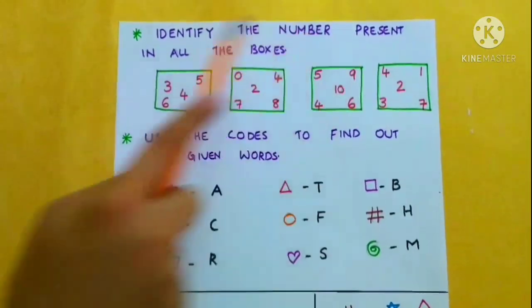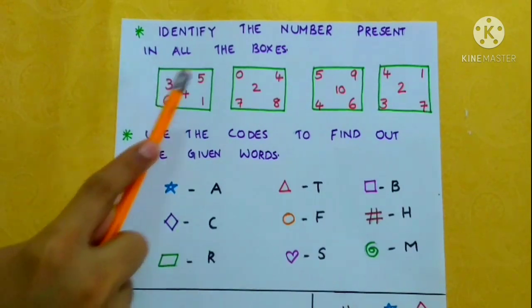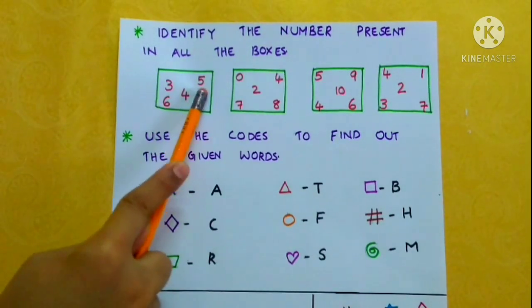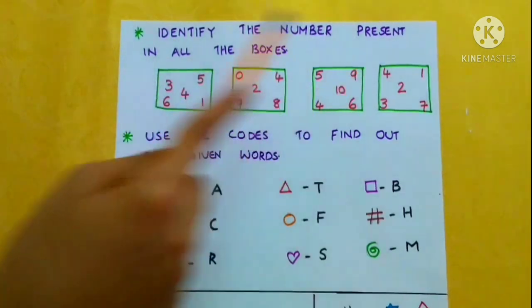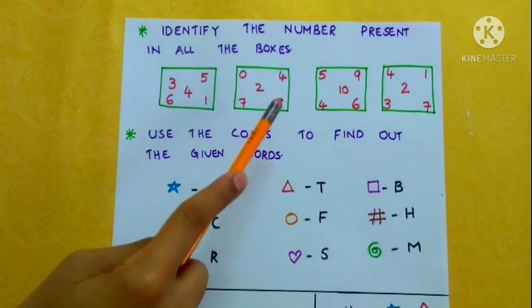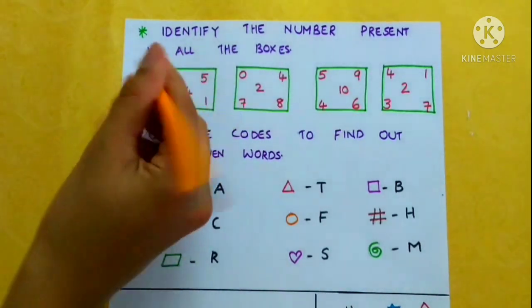Identify the number present in all the boxes. First, we have to take a number from this box: three, and check whether it's present in all the boxes. No, it's not present in all the boxes, so we have to cross out three.